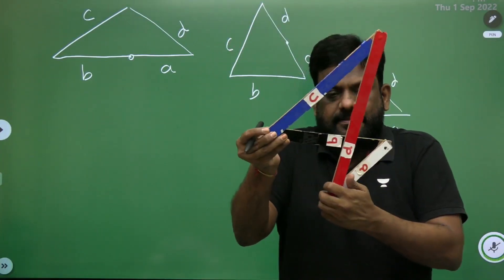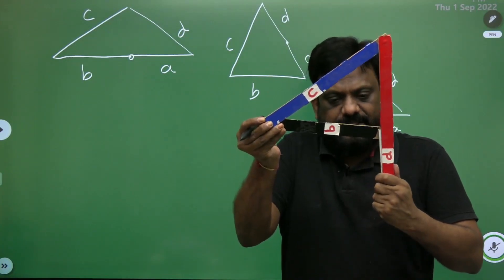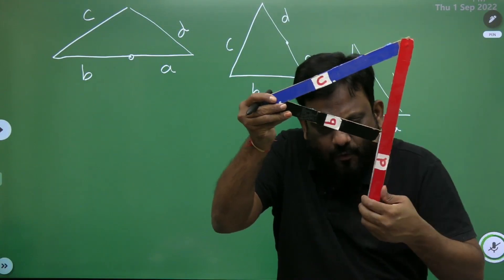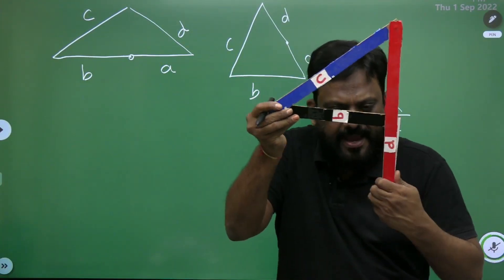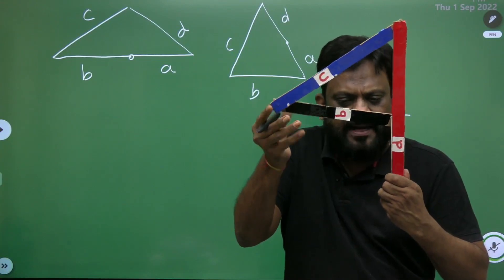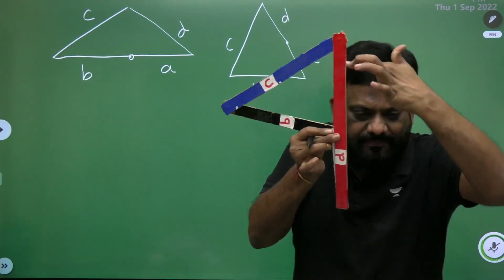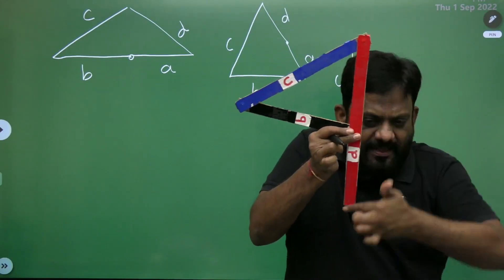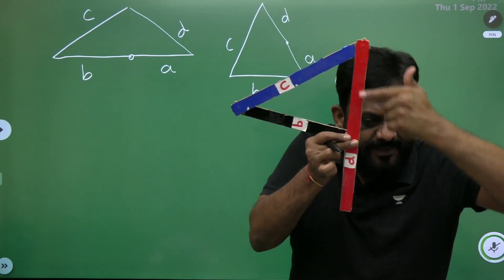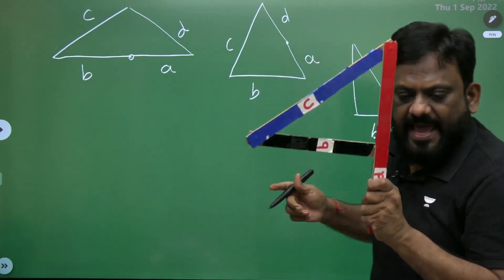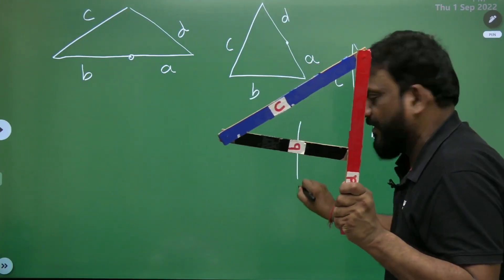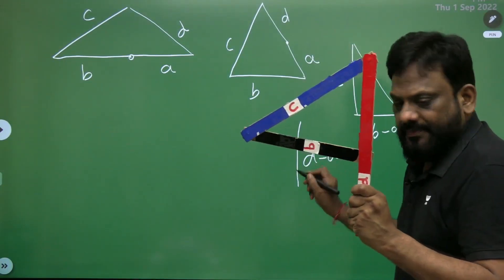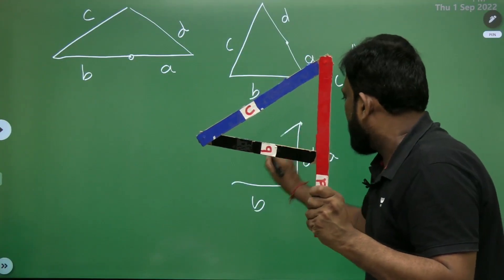Now for the next position, A and D are overlapping. The total length is D, and A is a part of it, so the remaining length is D minus A. The triangle formed in this position is: D minus A, B, and C.